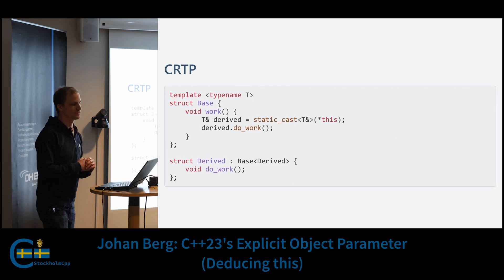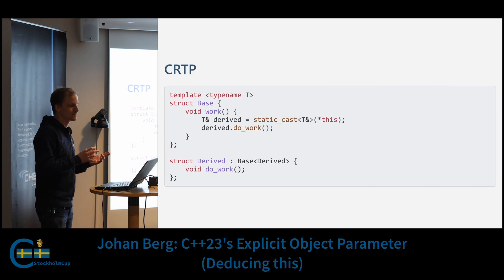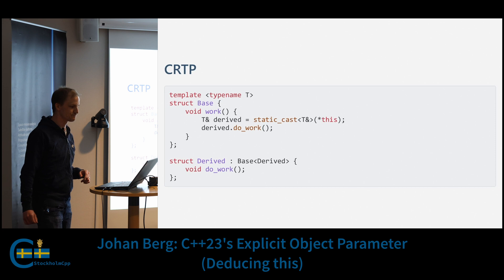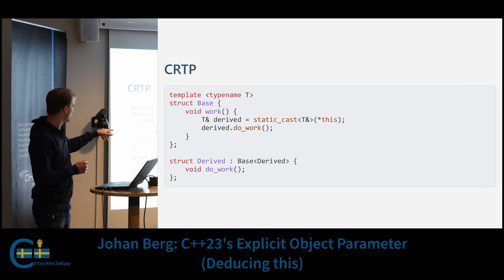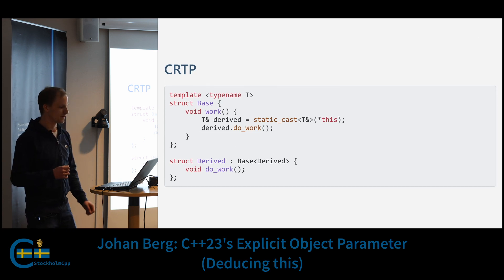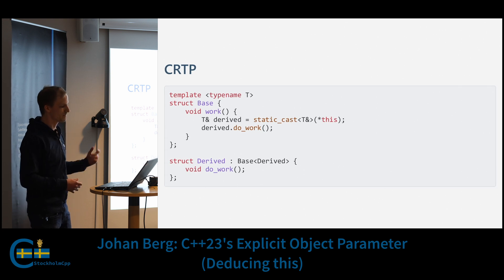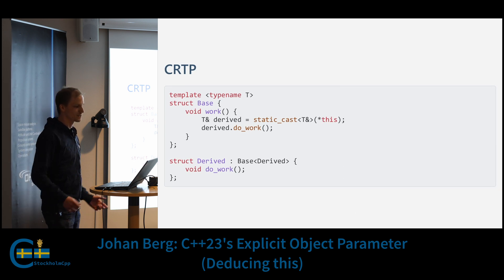We can also use this feature to simplify CRTP — the Curiously Recurring Template Pattern. It's where a derived class passes itself as the template argument to its own base class. Here we have a template class base, and as you can see the derived class is passing itself as the template argument. By doing that we can access the derived type inside a function in the base class — so in the function 'work' here we can static_cast 'this' to the derived type and call a function on it, such as doWork.